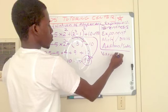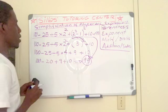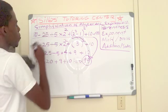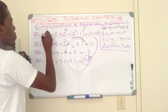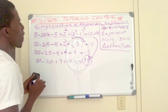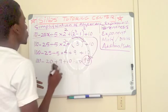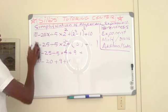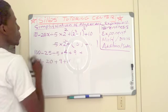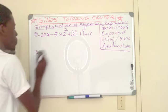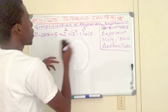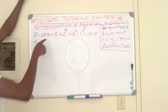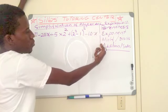Now I'm going to do one with variables. A variable is a letter from the alphabet. Let's say we keep the same numbers but put X and Y on them — 25X — and also add minus 10XY.